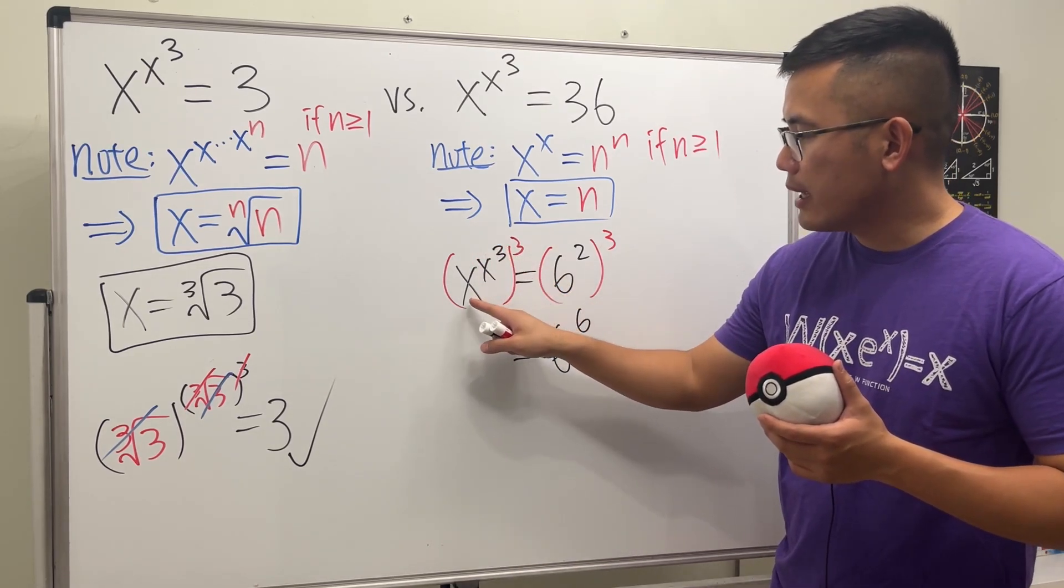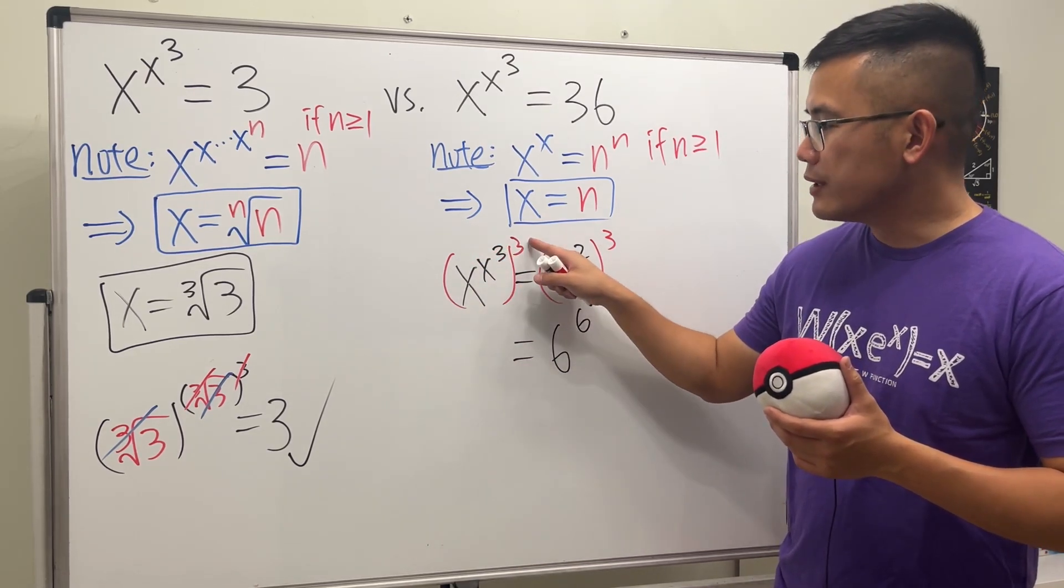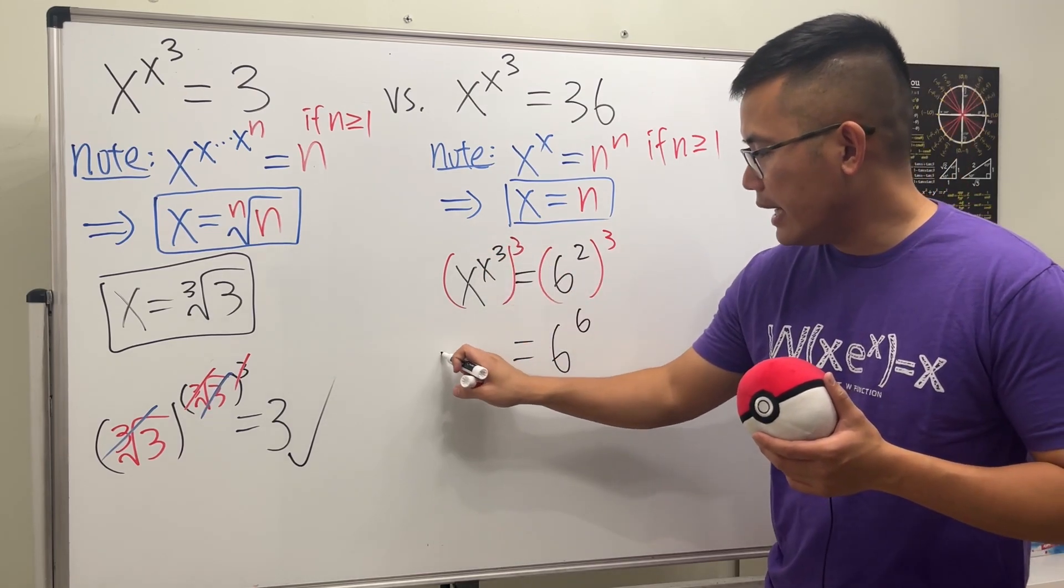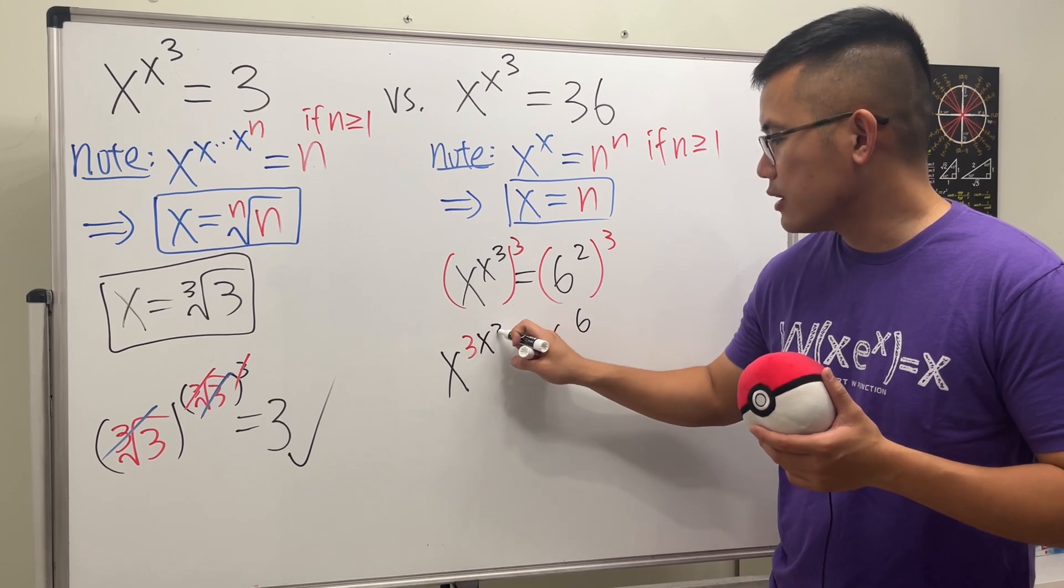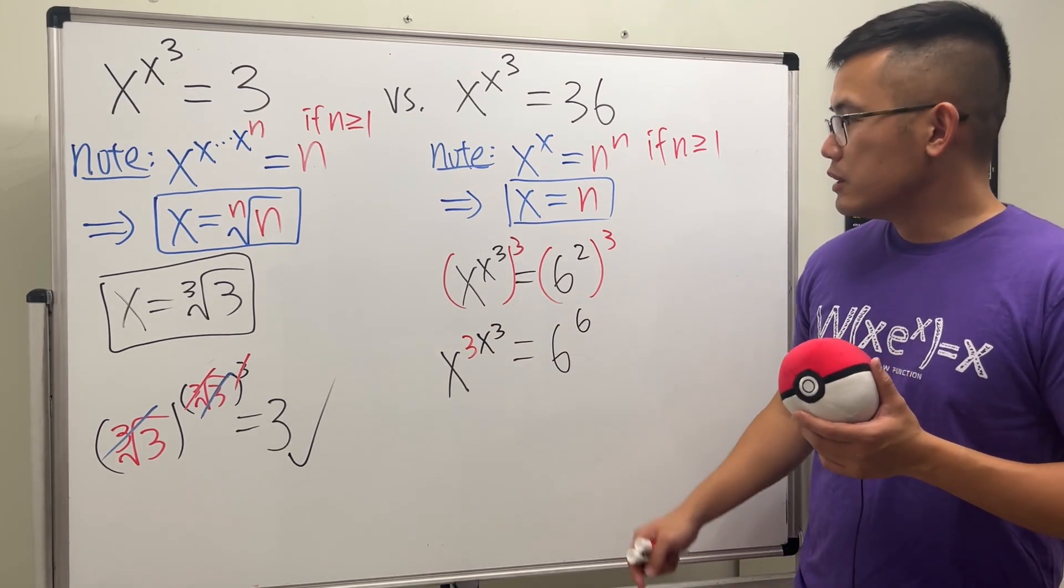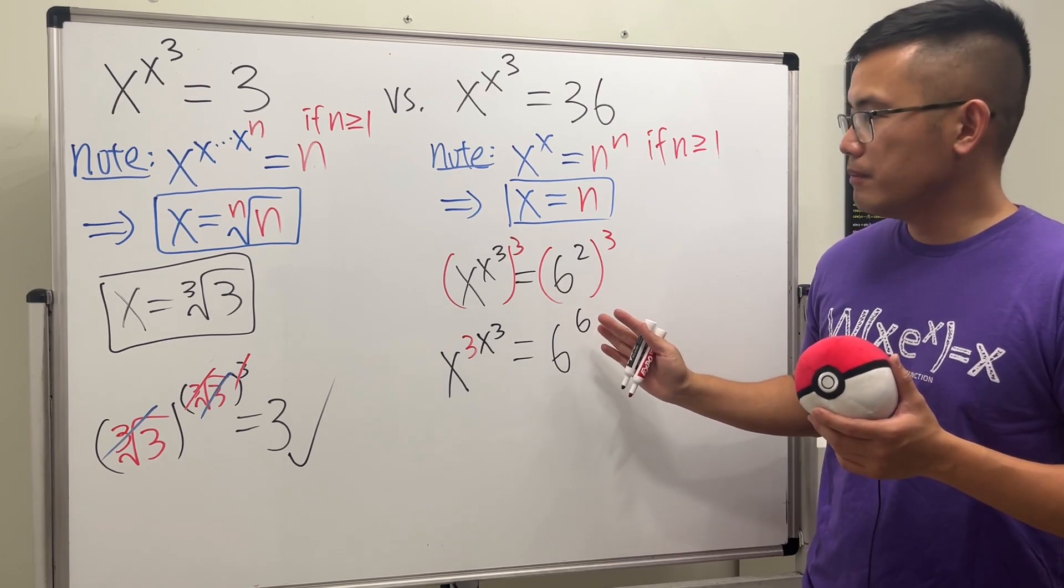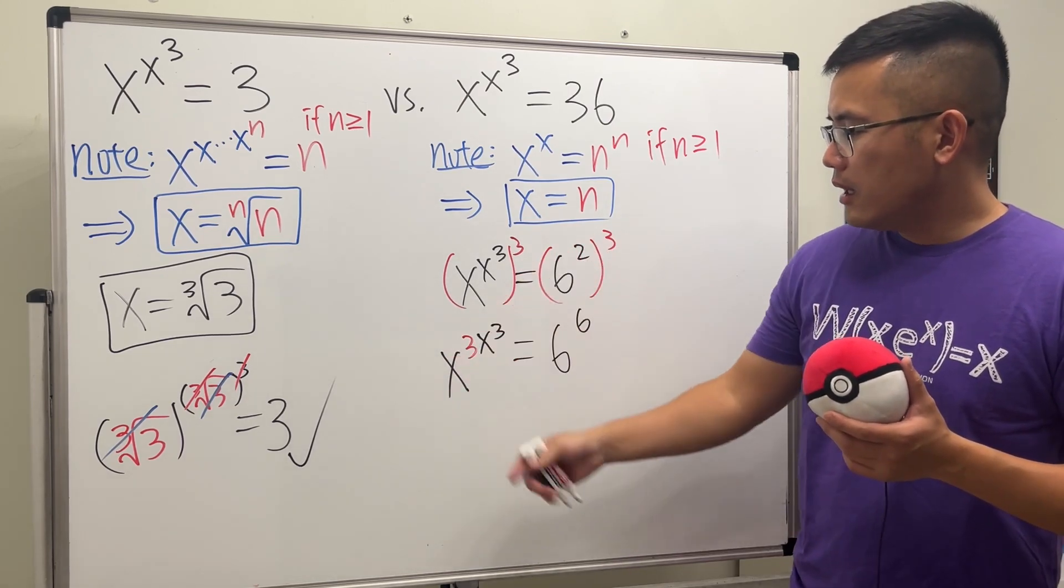So on the right hand side, we can legitimately say that's 6 to the 2 times 3, which is 6 to the 6 power. And then on the left hand side, you look at this as a power, x to this power and then to the third power, so you multiply x cubed with 3, so we get x to the 3 times x to the third power.